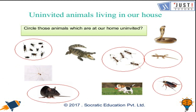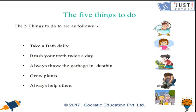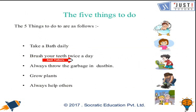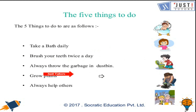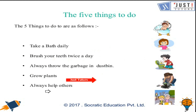Congratulations if all of your answers are correct — you are performing amazingly well! Now let's talk about the five things to do. The first one is take a bath daily, brush your teeth twice a day, always throw the garbage in the dustbin, grow plants, and always help others.